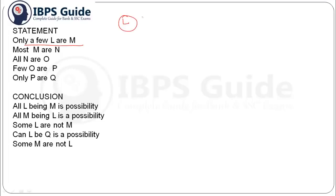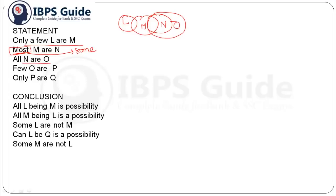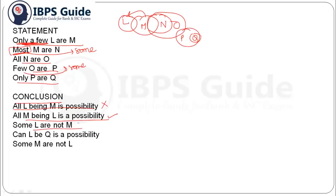Next question: 'Only a few L are M', 'Most M are N' — most is also treated as some — 'All N are O', 'Few O are P' — few is also treated as some — and 'Only P are Q', so Q will be drawn inside P. Conclusion: 'All L being M is a possibility.' No, it is not possible because the statement says 'only a few L are M', so this doesn't follow. Next: 'All M being L is a possibility.' Yes, M can share its area with L, so it is possible. 'Some L are not M.' Yes, this is also true — as the statement said L can share only this much area, the remaining part of L will not share any area with M.